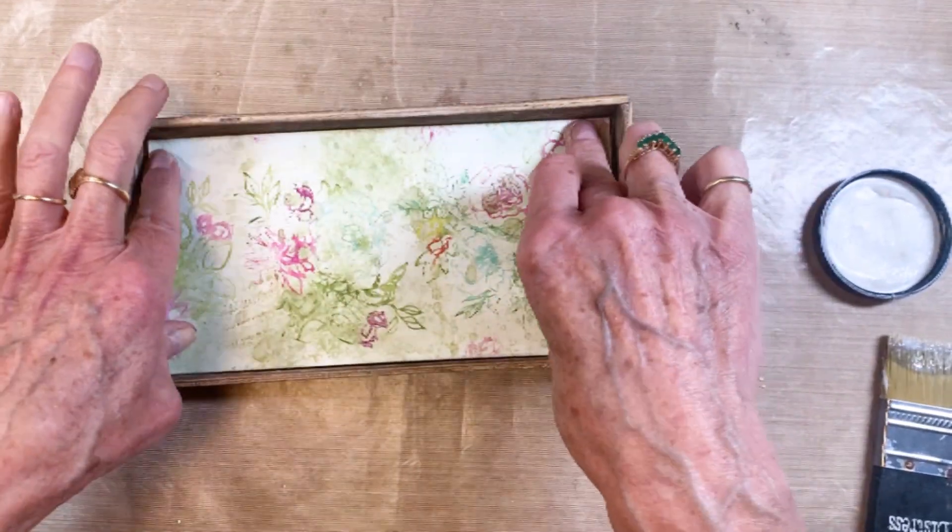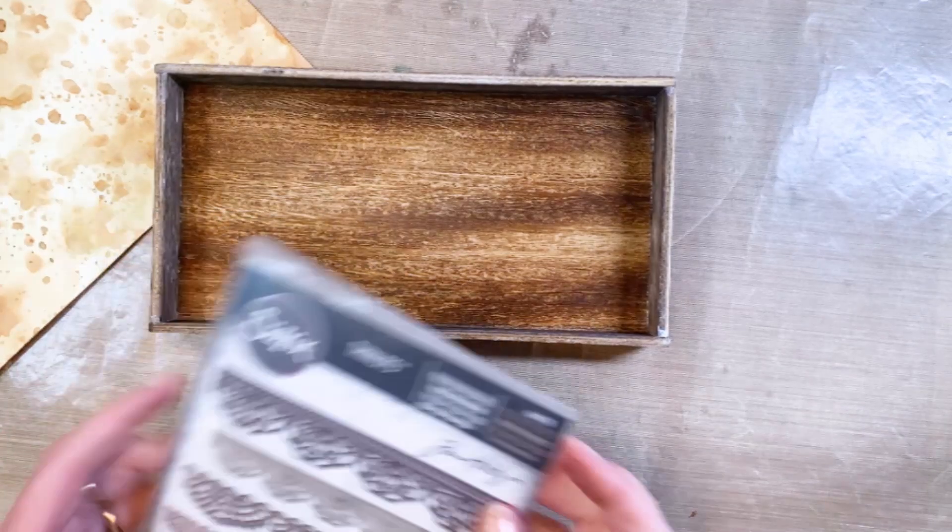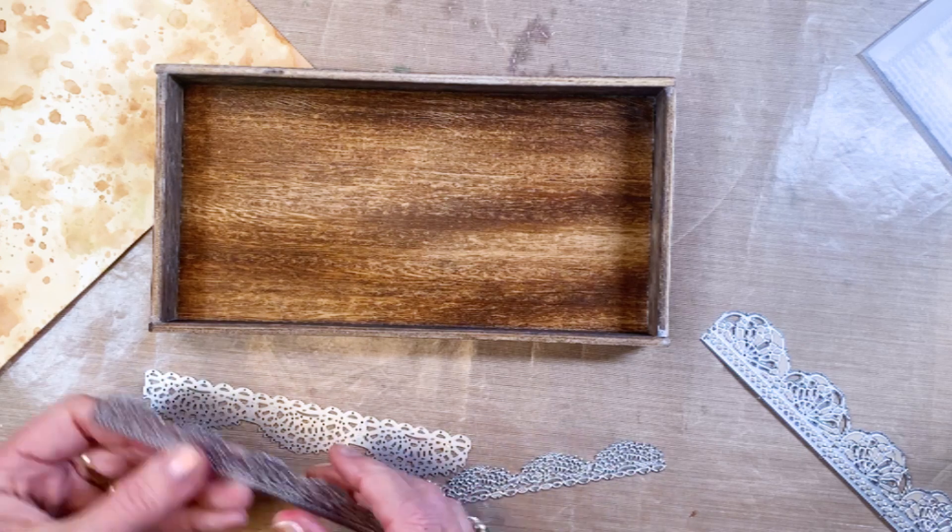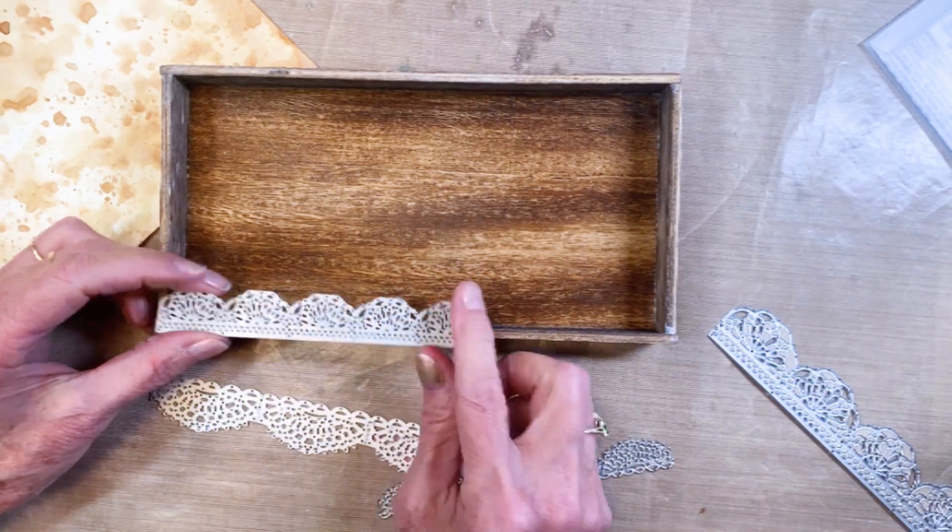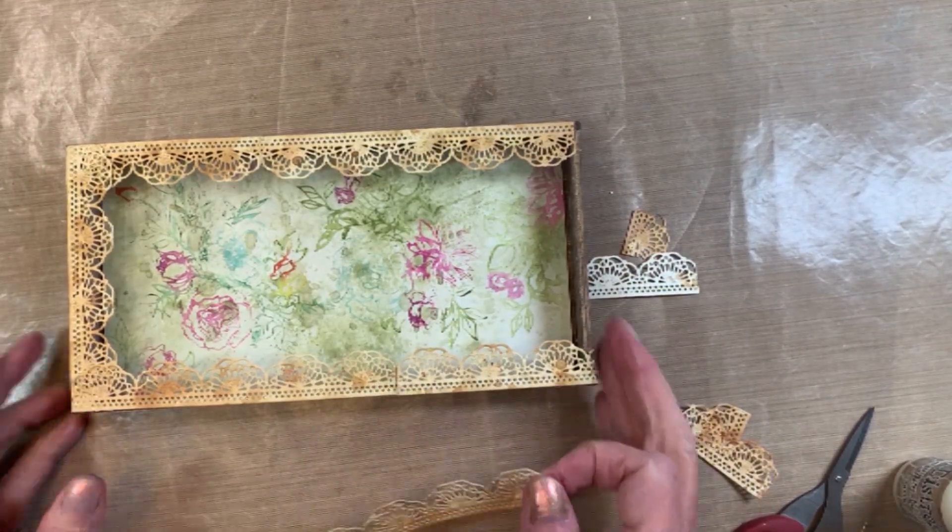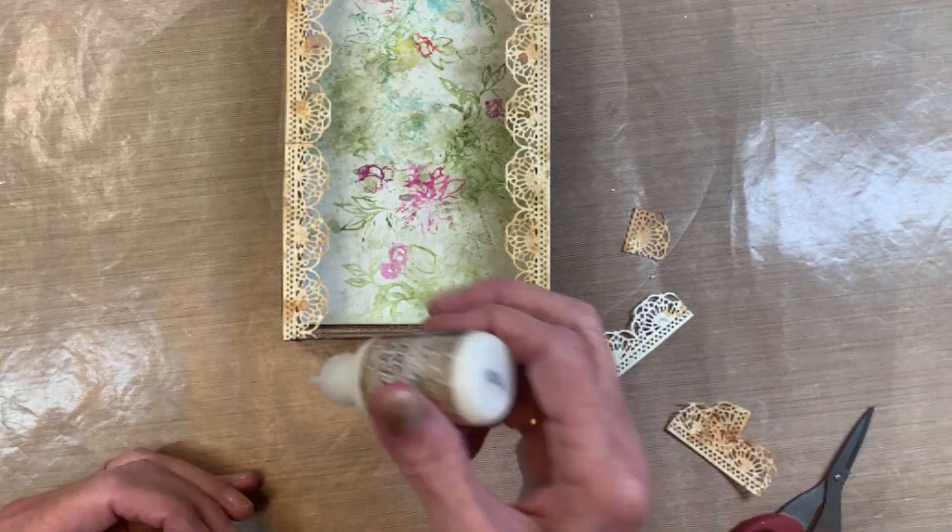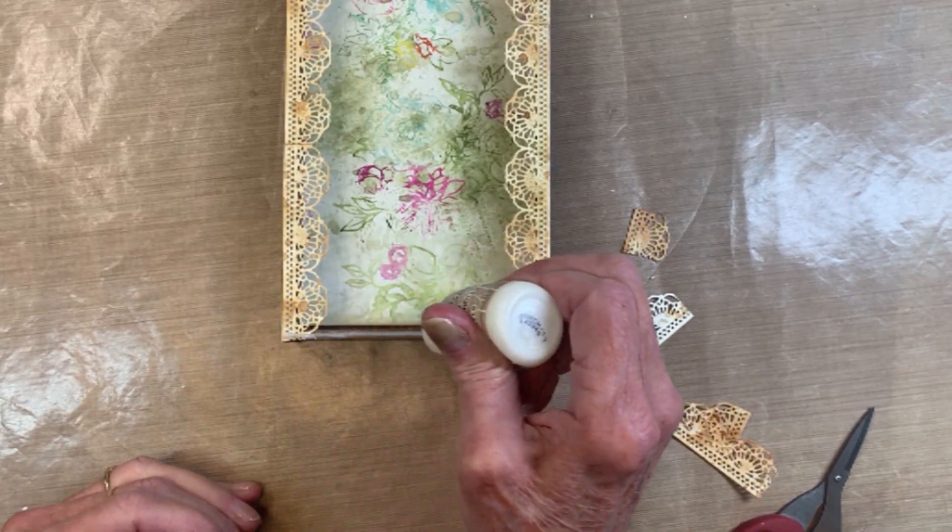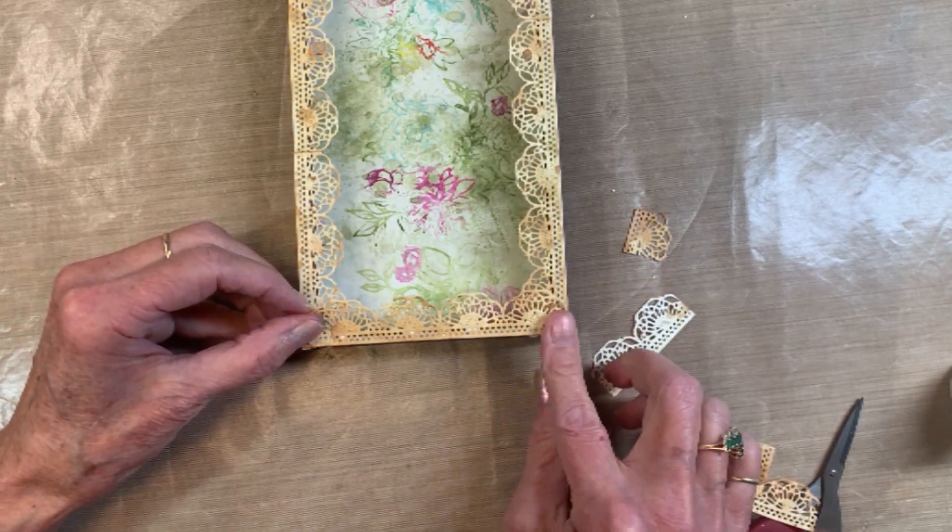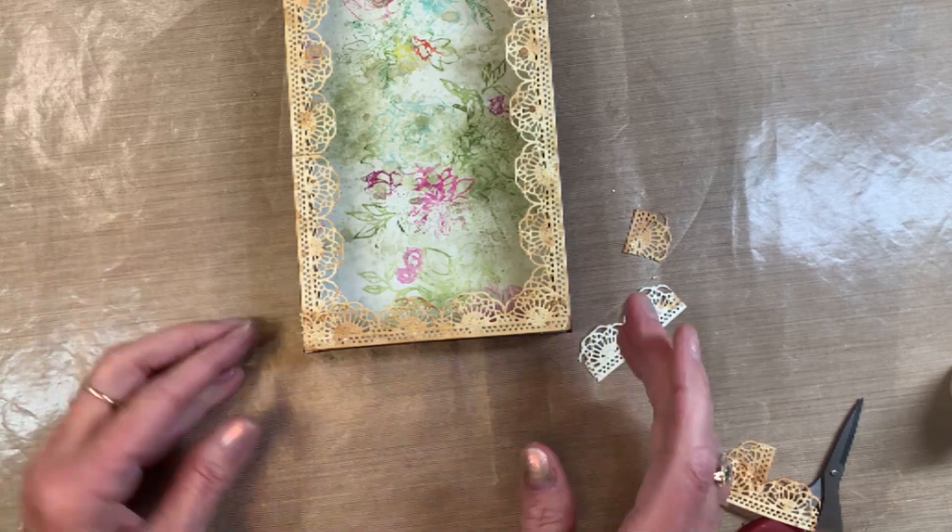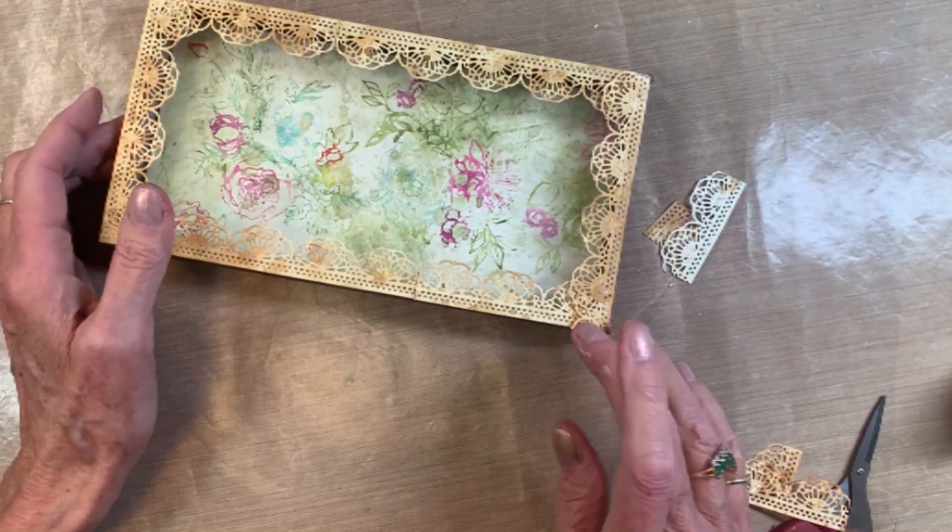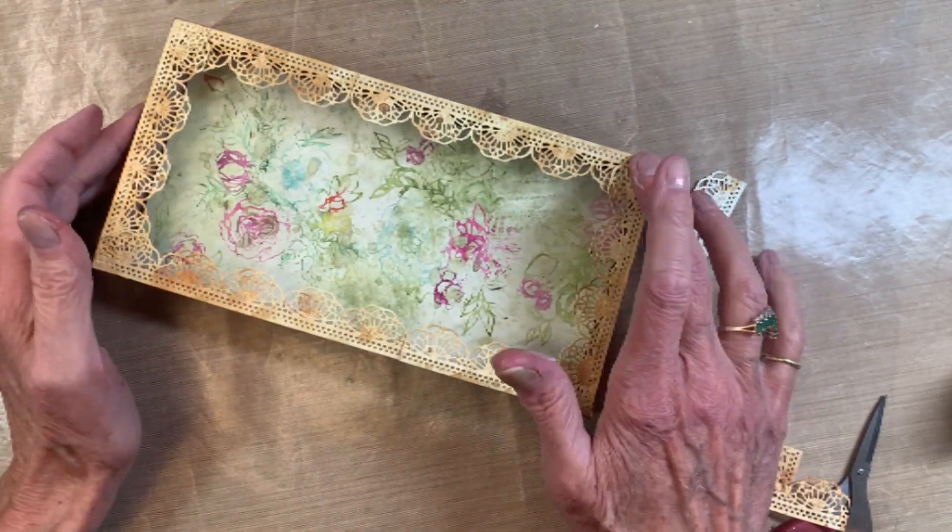The next thing we're going to do is the lace. This is from the alterations collection. I ended up die-cutting the lace pieces out of that ink smoosh piece on vintage photo watercolor paper. Then I'm going to adhere them to the exterior of the tray to give it a little bit of a feminine touch. I just thought that would be cool with all of the flowers that I'm going to use.